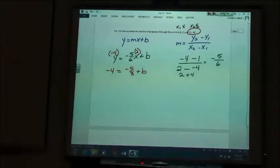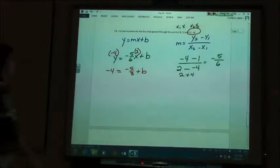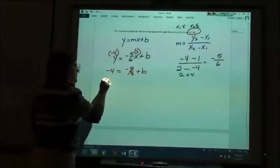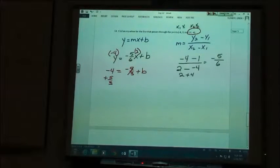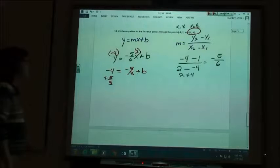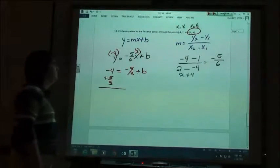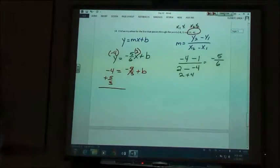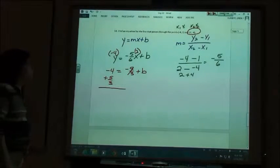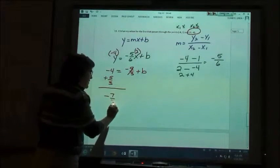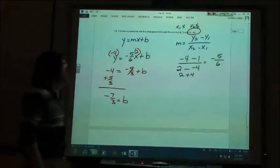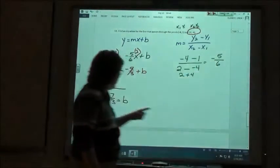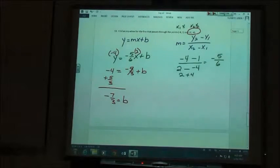And then, I'm going to do what? Are you going to move the negative 5 thirds over and make it positive? So, you're going to do negative 4 plus 5 thirds. Negative 7 thirds, then, is your b value. So, now you know your m value, you know your b value, you can write the equation of your line. So, what's the answer going to be?